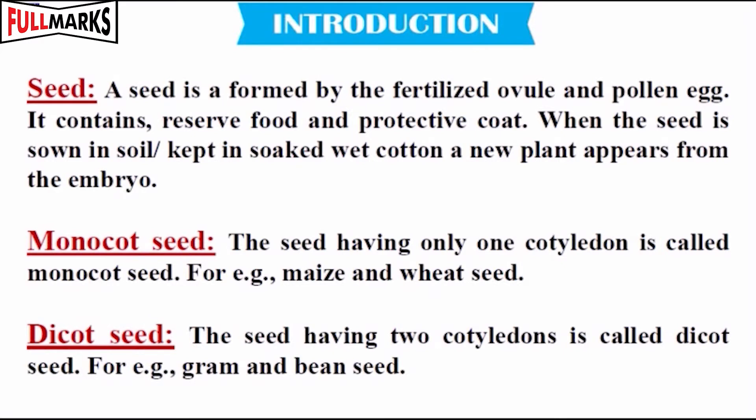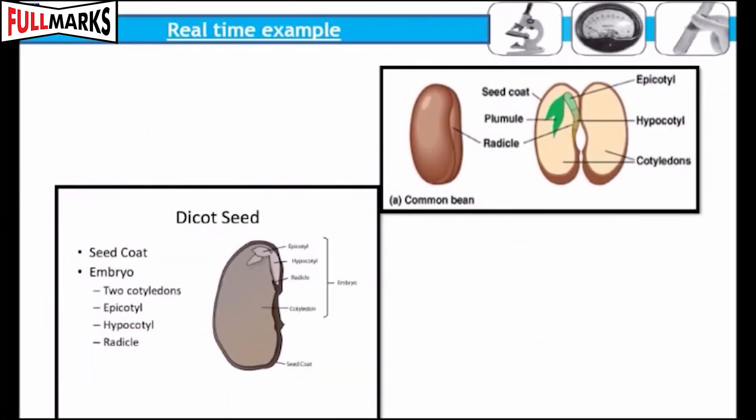Monocot seed: A seed having only one cotyledon is called a monocot seed — for example, maize and wheat. Dicot seed: A seed having two cotyledons is called a dicot seed — for example, gram and bean seed.